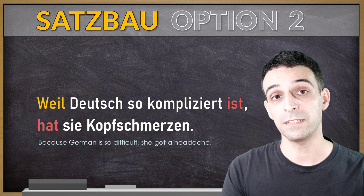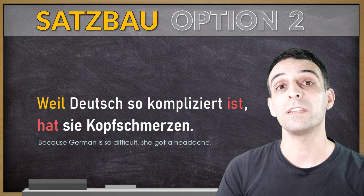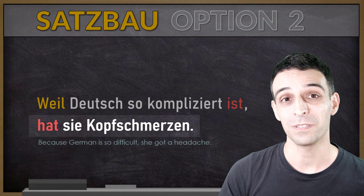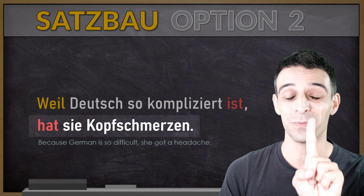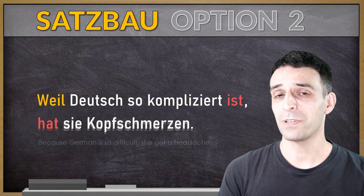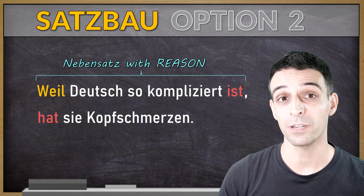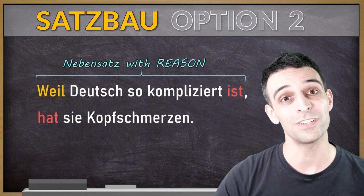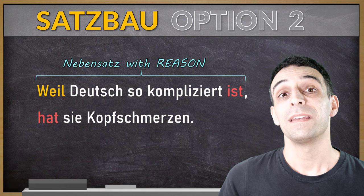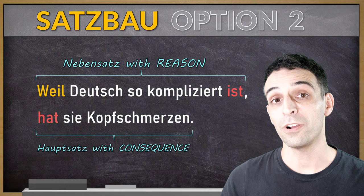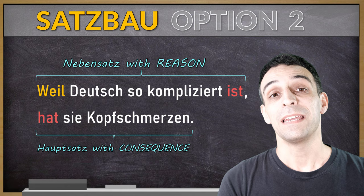The first part still starts with 'weil' and the conjugated verb is at the end — same as before. But the second part, our main clause, has to start with the conjugated verb in position one. Option two summary: the subordinate clause with the reason starts with 'weil' and has the conjugated verb at last position, followed by a comma. The main clause starts with the conjugated verb right after the comma and shows the result or consequence.